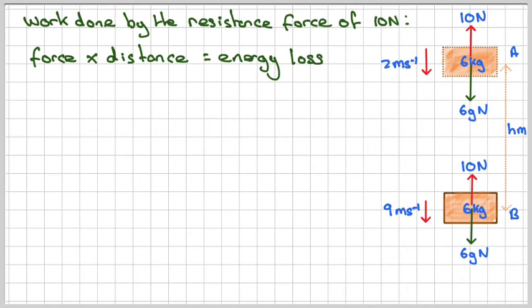So the force is going to be 10 newtons times the height, the distance moved, which is h, and the energy loss from the previous part was 6gh minus 231 joules. Now we have an equation which we can now solve, because 10h is equal to 6gh minus 231.